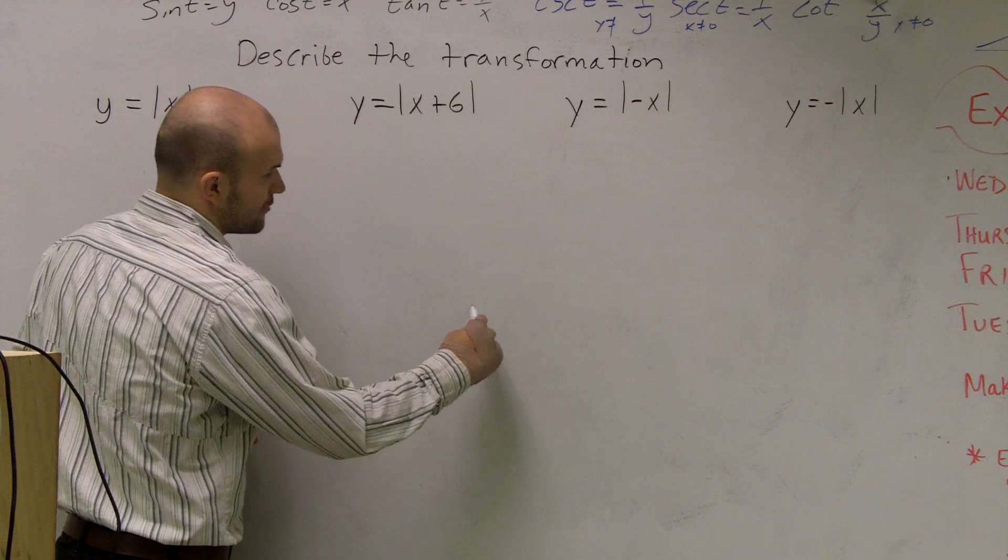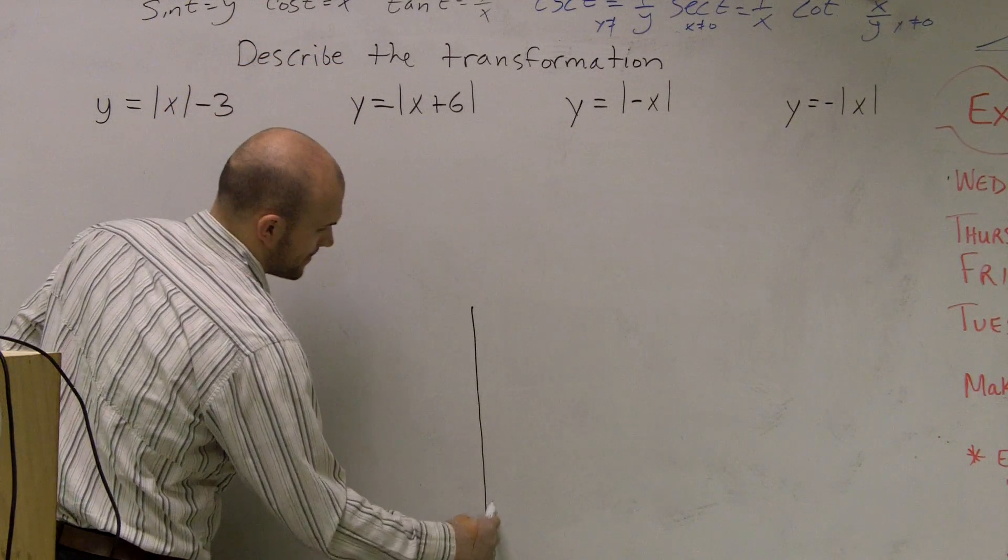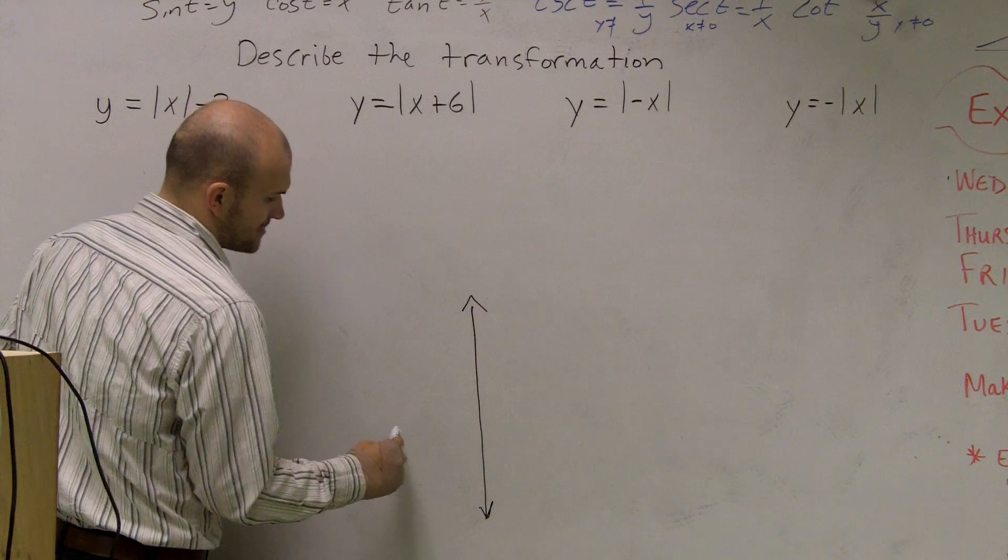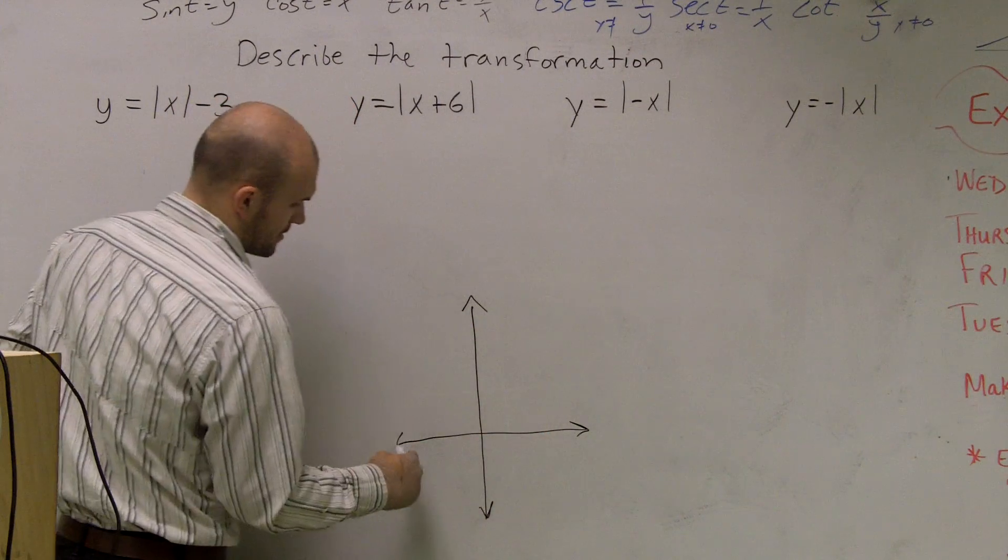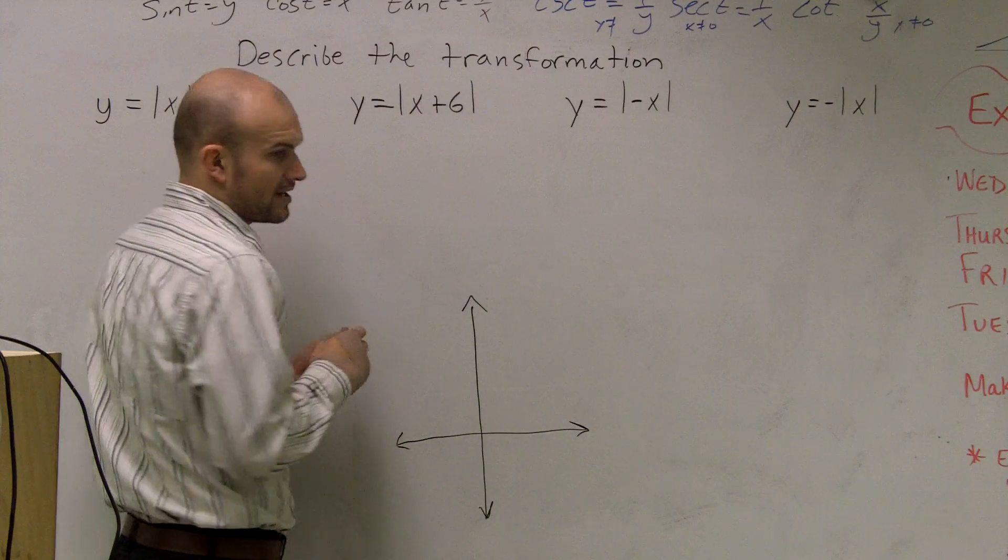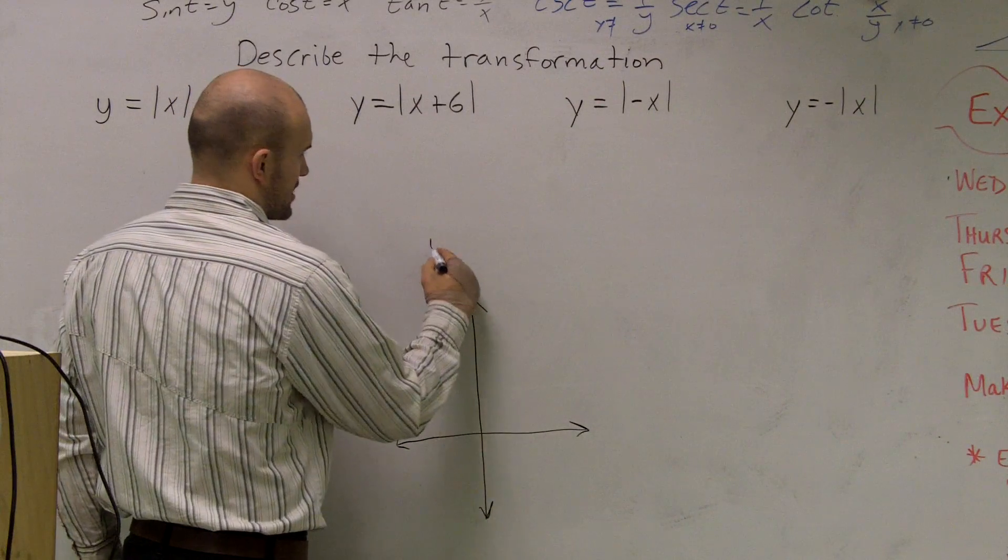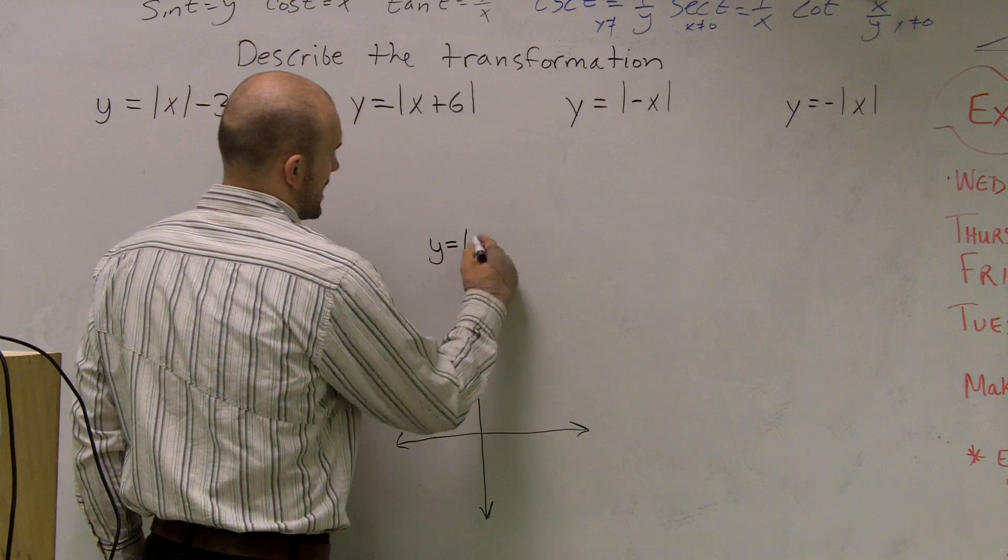So the first thing we need to know is exactly what does our parent graph look like. If you remember, an absolute value graph, let's just write it, I'll write the original parent graph, which is y equals the absolute value of x.